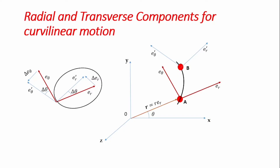We start by working with the radial components of the particle's motion. We derived earlier that deᵣ/dθ = 1 when looking at normal and tangential components, and we've established that deᵣ/dθ = eθ.